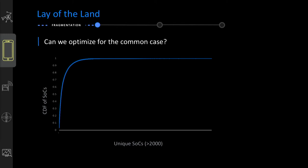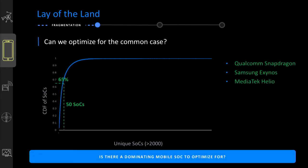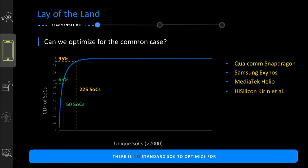This is the CDF of all the SOCs the app runs on. You might say there's a long tail, so can't we just optimize for the common case? The data doesn't really support it. If we built 50 different versions of the app optimized for 50 different SOCs, that would only cover 65% of our users. To reach 95% of users, we'd need 225 unique versions of the app. The takeaway is that there's no standard SOC — whatever phone we tend to have, we think that's what everyone has, but that's not true here.